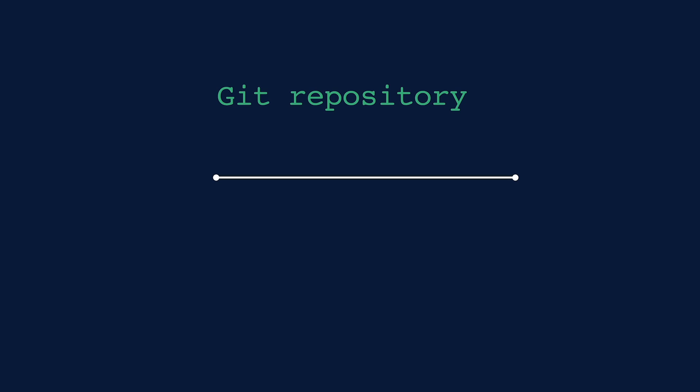Understanding Git will allow you to contribute to most open source projects. So before we start using it, let's understand some of the concepts. Some people call them repositories — we'll use repo for short. That's the base of your project. When you use Git, you're making changes to your files, taking a snapshot and saving those changes, and leaving notes that explain them. Then you repeat. When you create a repo, it'll have two areas: working and staging.